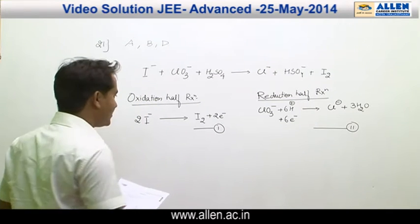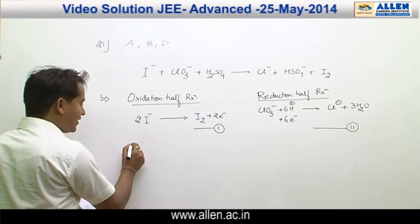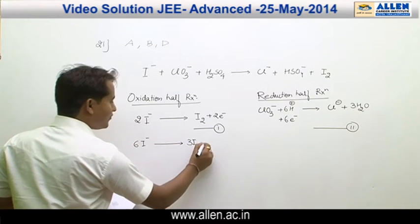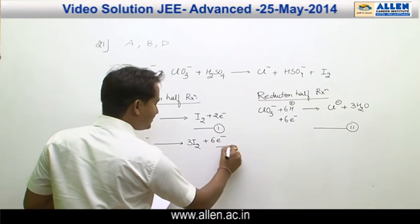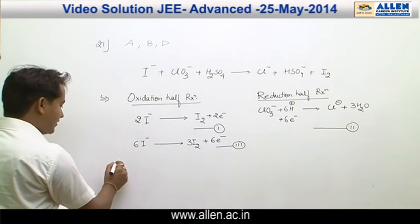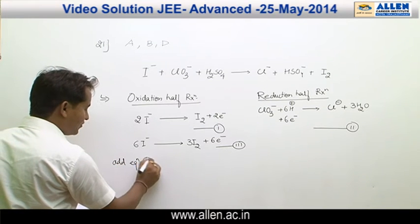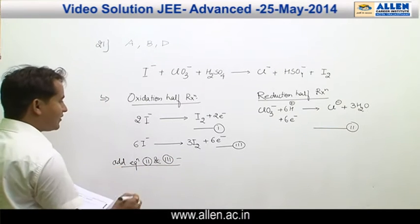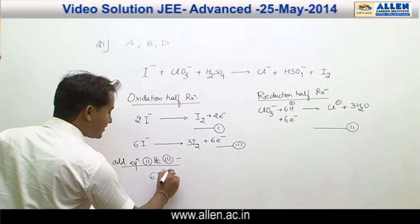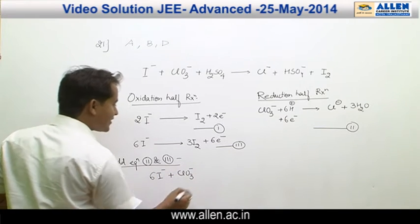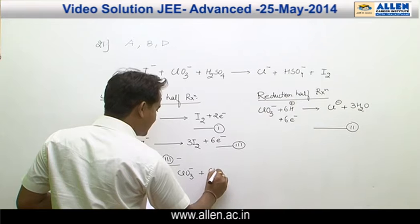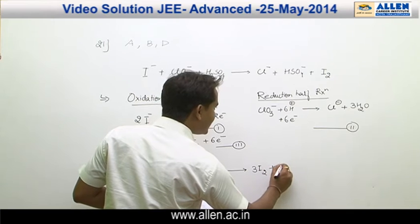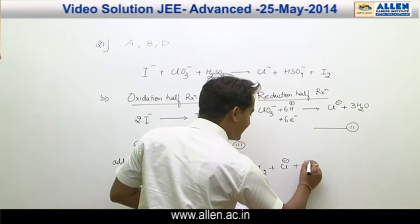To obtain a complete reaction, we have to multiply equation 1 by 3: 6 I⁻ gives 3 I₂ plus 6 electrons. Now, add equation 2 and 3 to obtain final balanced equation: 6 I⁻ plus ClO₃⁻ plus 6 H⁺ gives 3 I₂ plus 3 H₂O.